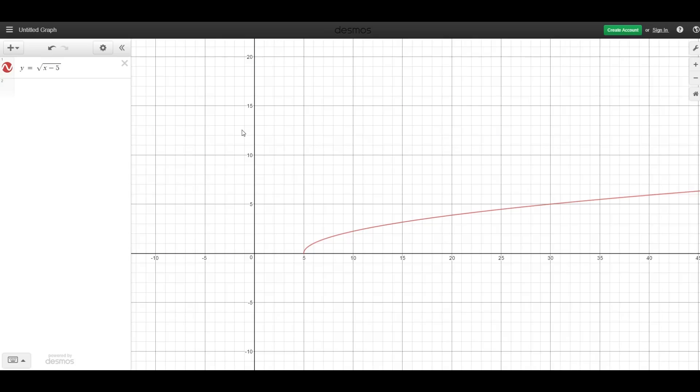Here I graphed our function, y equals the square root of x minus 5. As you can see, for all our x values, we can only use 5 and onwards. We cannot use any number less than 5.